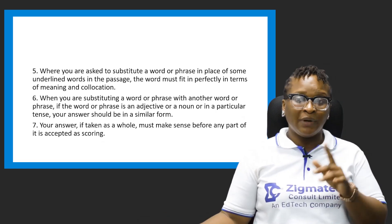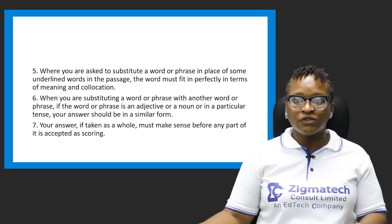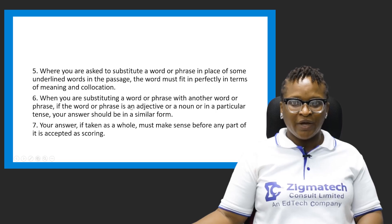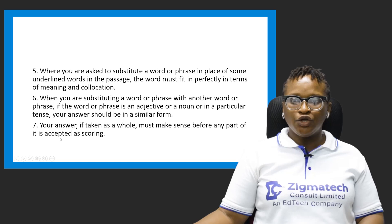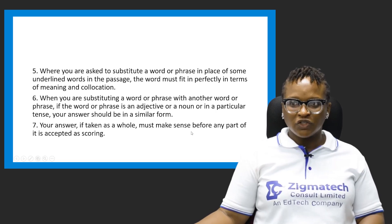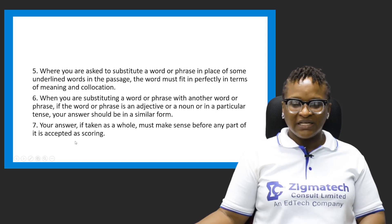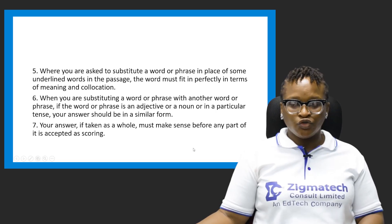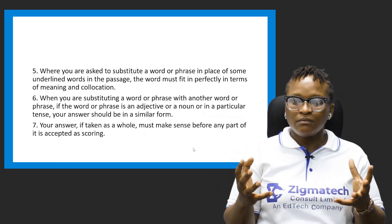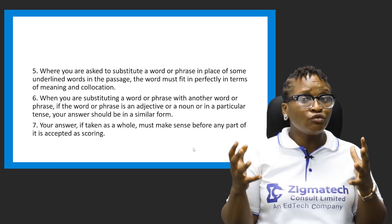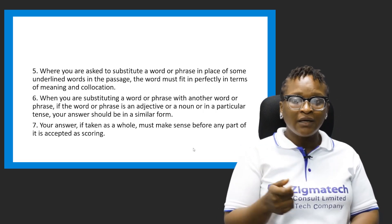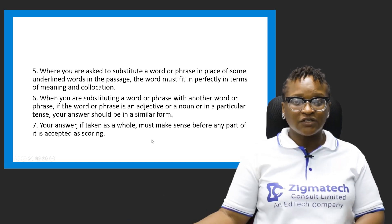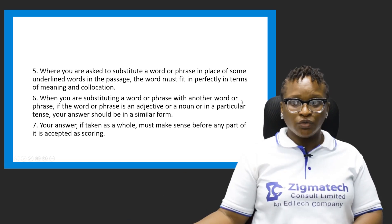We will go through a particular comprehension passage to clear us on how to approach these aspects. Your answer, if taken as a whole, must make sense before any part of it is accepted as scoring. So your answer must make sense — if it doesn't make sense, it will not be regarded. If you're supposed to give an answer in sentence form, then you have to give it in sentence form, else it will not give you the required scoring.